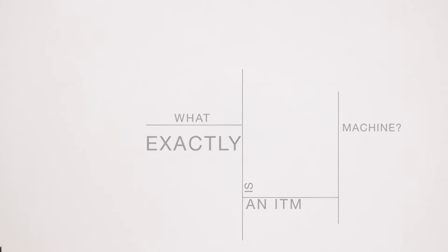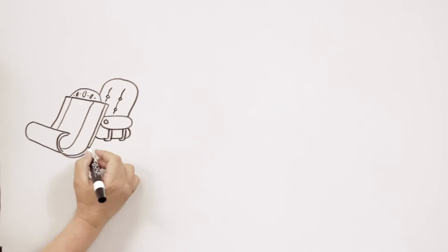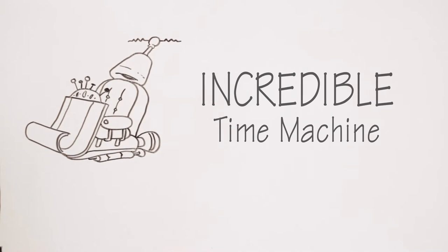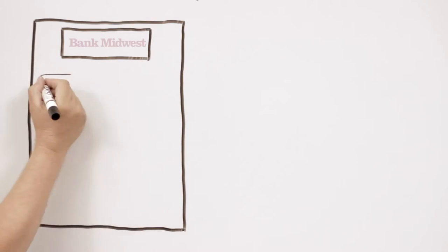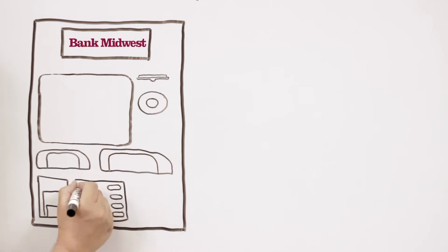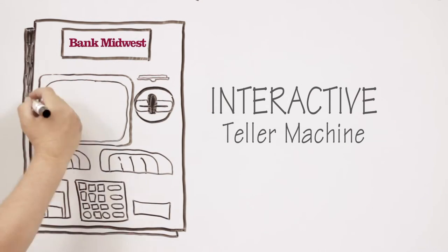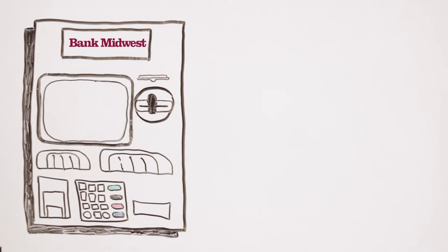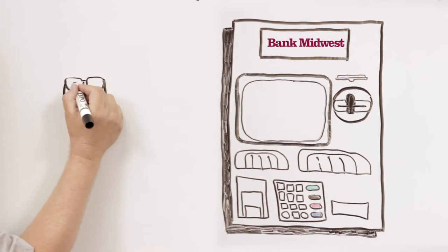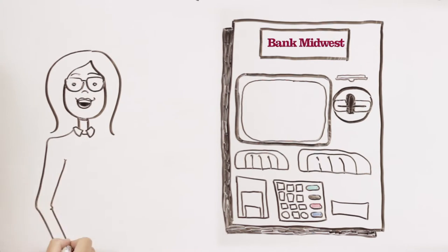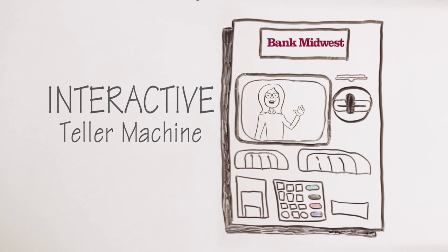ITM stands for Incredible Time Machine. Okay, just kidding. An ITM is an Interactive Teller Machine. For real, what this means is that if a Bank Midwest teller lived in an ATM machine, their home would be called an ITM machine. And in turn, you would be able to have a machine with a live teller that would be able to assist customers from a remote location.